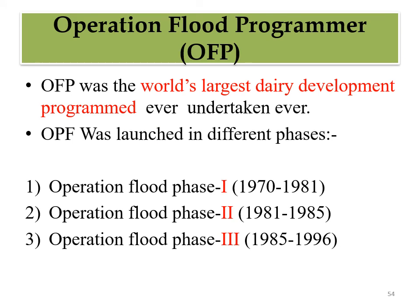Operation Flood had three phases spanning 1970 to 1996 - a total of 26 years. The first phase was 1970 to 1981, the second phase was 1981 to 1985, and the third phase was 1985 to 1996. Due to this 26 years of hard work, today India is number one in milk production.